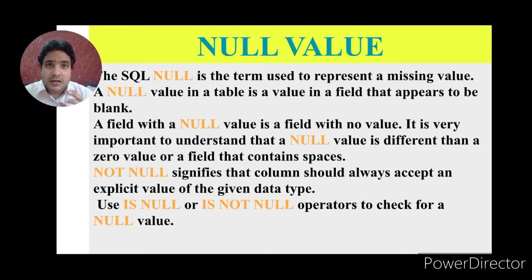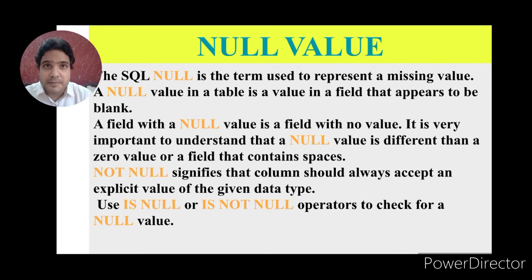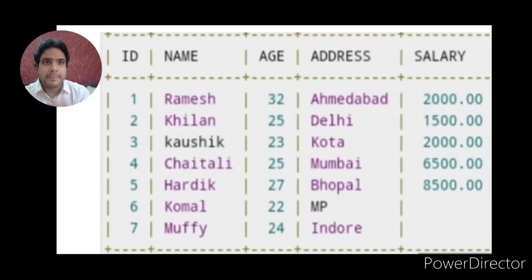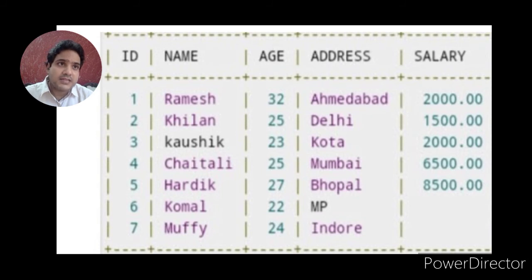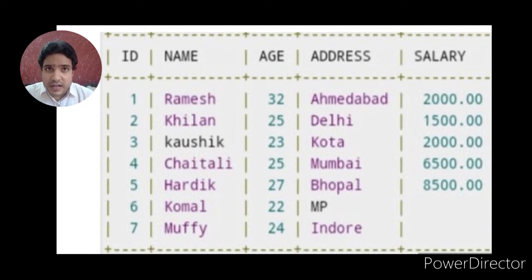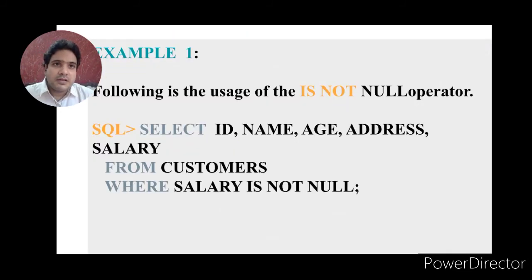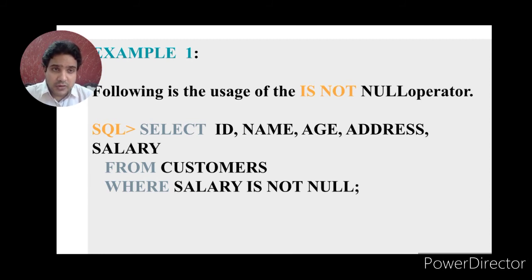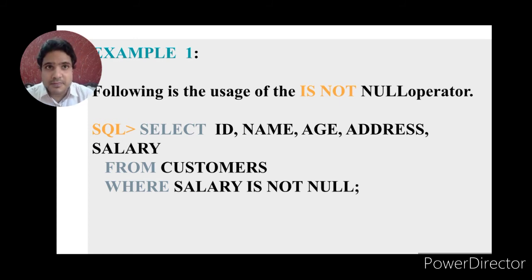We compare null and not null values using the IS operator and IS NOT operator. Consider the table where ID 6 and ID 7 have a salary value that is null — it is blank. For the IS NOT NULL example: SELECT id, name, age, address, salary FROM customers WHERE salary IS NOT NULL. This displays records of customers with all attributes whose salary is not null.